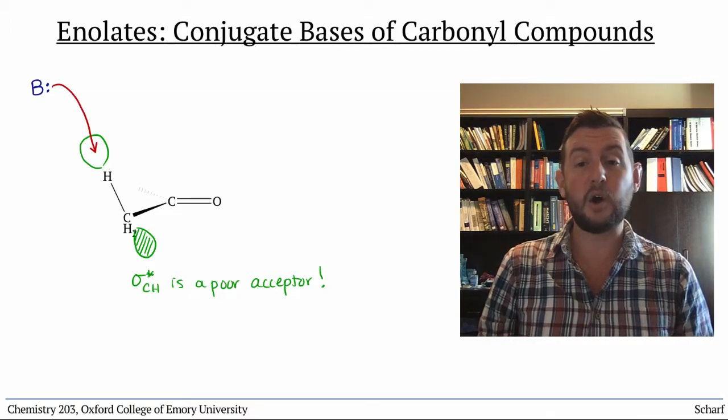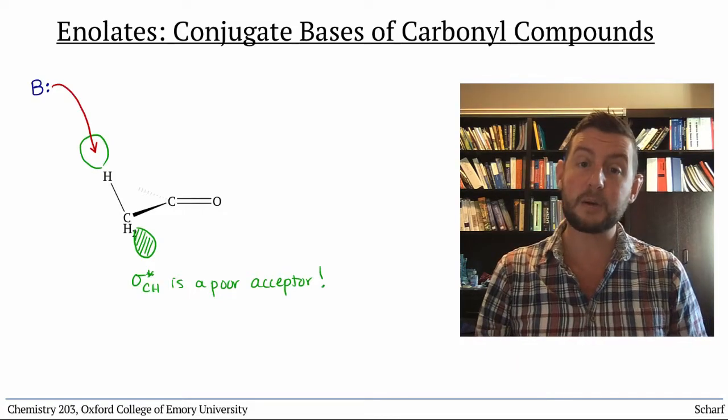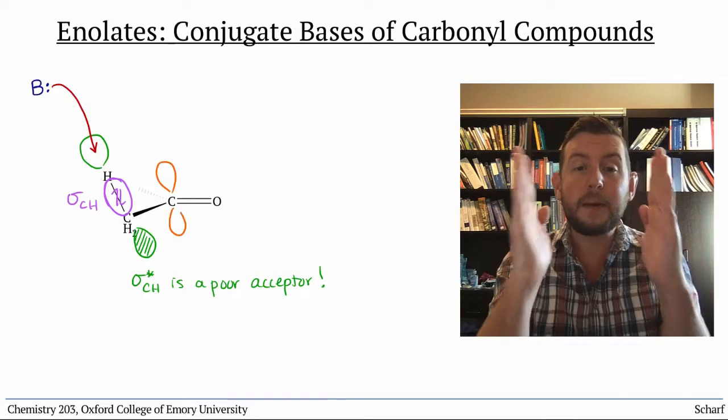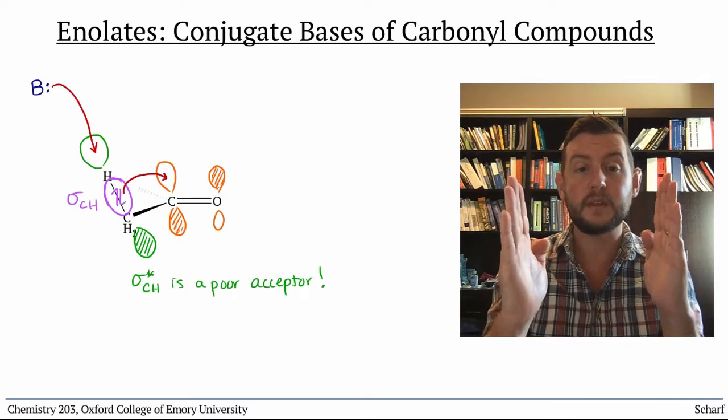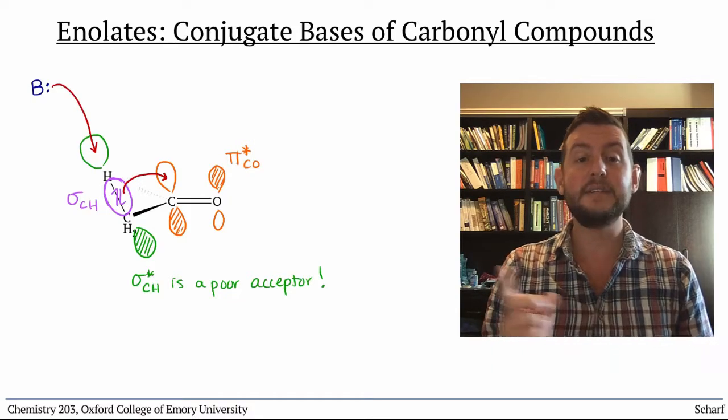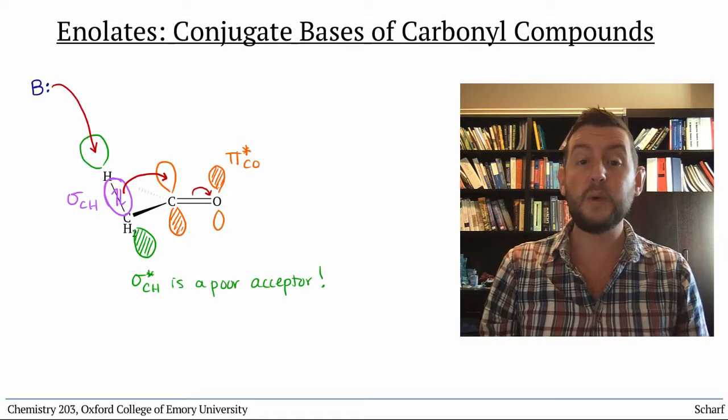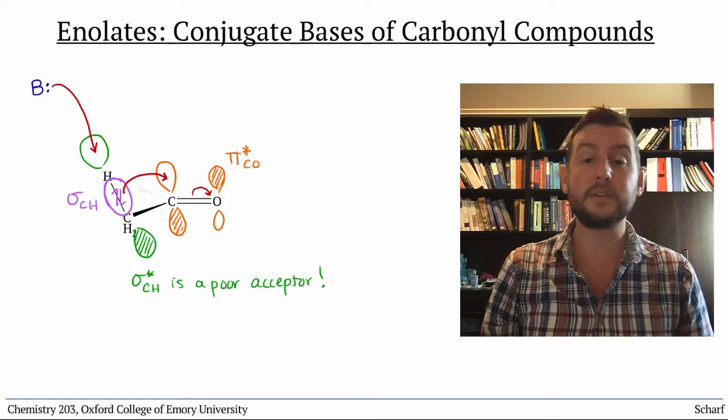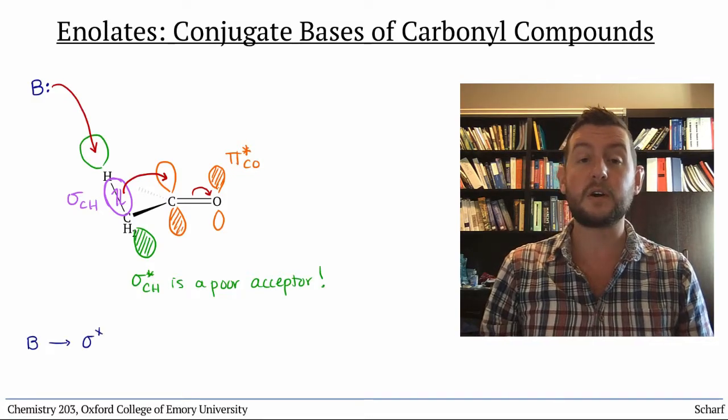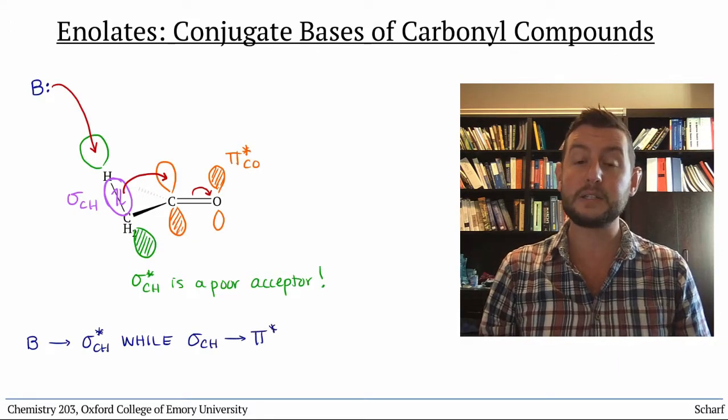In fact, alpha protons can only be deprotonated from a specific conformation of the carbonyl compound when the CH bond is aligned parallel to pi star CO, so that the electrons from the breaking CH bond have a decent acceptor orbital to go into. So we could describe the molecular orbital interactions this way. The base donates into sigma star CH, while sigma CH donates into pi star CO.